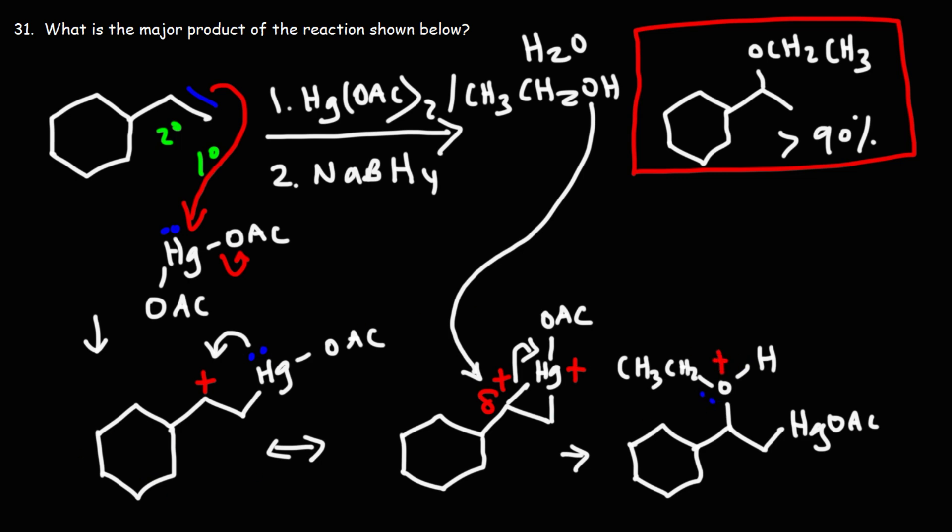So we need to do an acid-base proton transfer reaction. Keep in mind, one of the acetate ions was kicked out, and so we still have that. So that's going to act as a base. So that's our acetate ion, OAc minus. And this is going to abstract the proton.